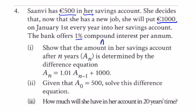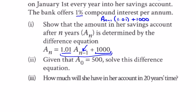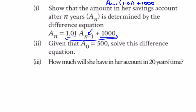So whatever she has in her account is going to be whatever she had in the previous year — that's the n minus one part — times 1.01 for the compounding, and then she puts in a thousand at the beginning of the new year. So the interest rate plus one, and then the thousand she puts in at the beginning of the year before the interest rate is applied.